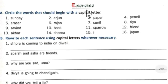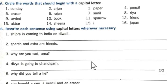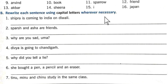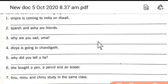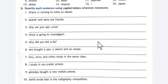I hope you understood. Now here is an exercise for you. Circle the words that should begin with a capital letter — follow the rules we learned. Words given include: Sunday, Arjun, paper, pencil, eraser, Rajan, Suneil, Riya, Aryan, bog, sparrow, friend, Akbar, Seena, I, Japan. Circle the ones that need a capital letter. There are 10 sentences to rewrite. Very good, dear student!